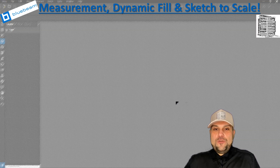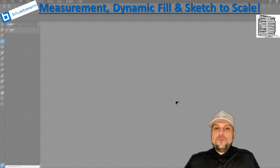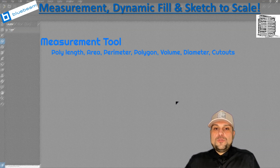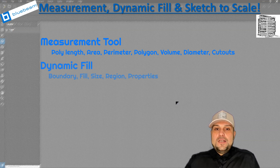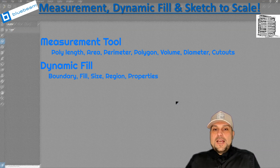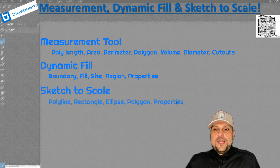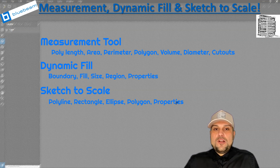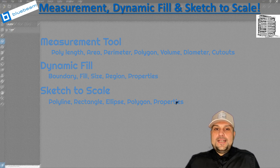Hello guys, today I want to show you how to do a 2D takeoff in Bluebeam. We're going to go through the measurement tools and I'm going to show you how to scale and use the measurement tools. Then we're going to jump into a dynamic fill and we're going to see the best practices of using the dynamic fill for scaling and getting the takeoffs. And the last portion we're going to look at sketch to scale — this is the best way to sketch while drawing to scale, so it's going to save you a lot of time. Let's jump into Bluebeam so we can start looking at these steps.